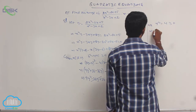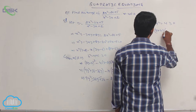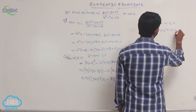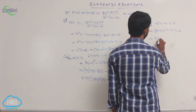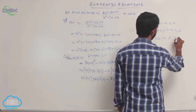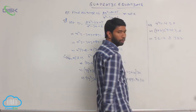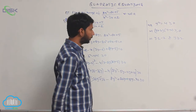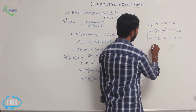Split into factors: (y + 2)(y − 2) ≥ 0. Solving the inequality gives y ≤ −2 and y ≥ 2.